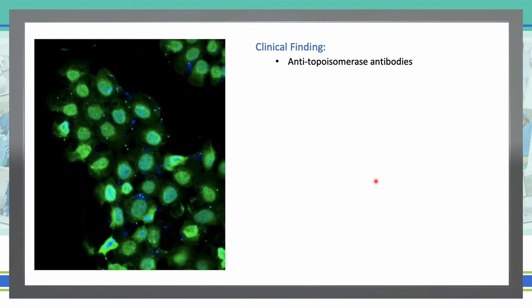Anti-topoisomerase antibodies are autoantibodies directed against topoisomerase, also referred to as anti-DNA topoisomerase-1 antibody. They are found in autoimmune diseases because they react with cell proteins. Mostly we are going to see that in diffuse scleroderma.